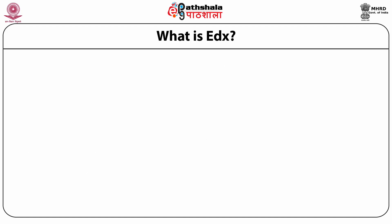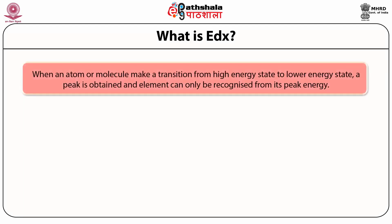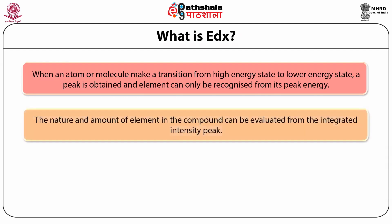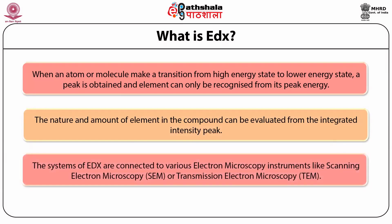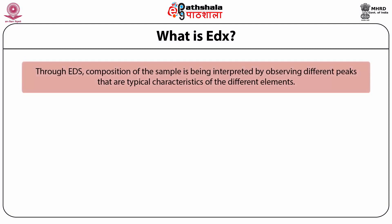Moving further in the EDX analysis: when an atom or molecule makes a transition from a higher energy state to a lower energy state, a peak is obtained, and an element can only be recognized from its peak energy. The nature and amount of an element in a compound can be evaluated from the integrated peak intensity. EDX systems are connected to various electron microscopy instruments like scanning electron microscopy (SEM) and transmission electron microscopy (TEM). Composition of the sample is interpreted by observing different peaks that are typical characteristics of different elements.